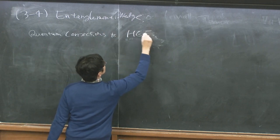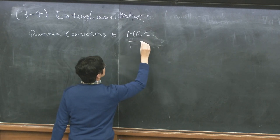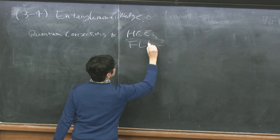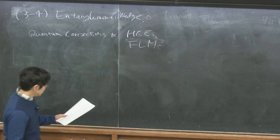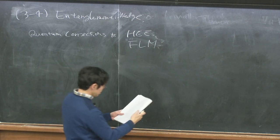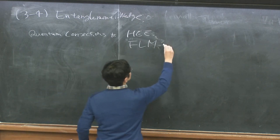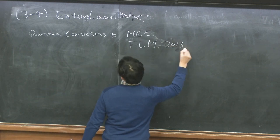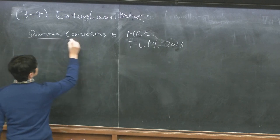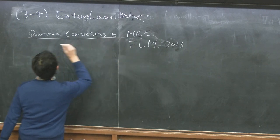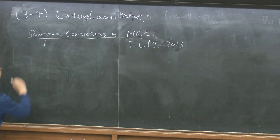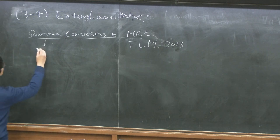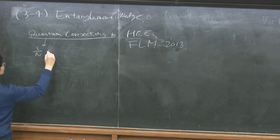This was worked out by Faulkner, Lewkowycz, and Maldacena in 2013. This quantum correction means there are some quantum gravity one-loop corrections, and in terms of the gauge theory, it's like a 1/N correction.